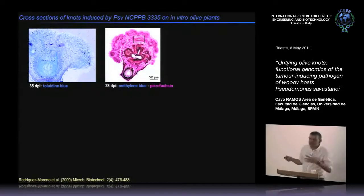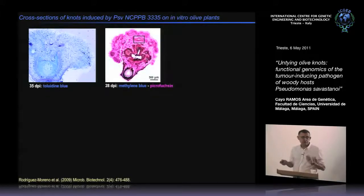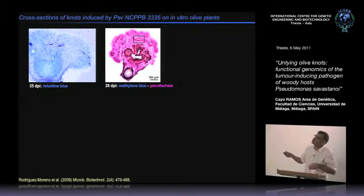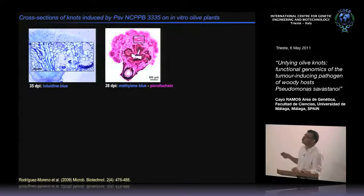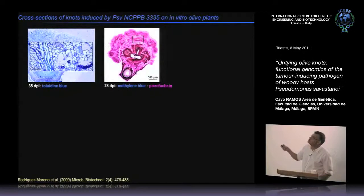We also examined whether the tumor formed in the in vitro micropropagated olive plant has the same structure as that of adult olive plants. A cross-section of the tumor taken at 35 dpi stained with toluidine blue shows hyperplastic tissue formation. The internal cavities described for tumors in adult olive plants are similar, and we could also observe newly formed xylem vessels in these plants.